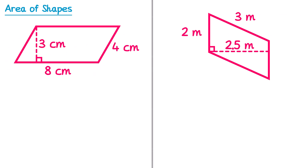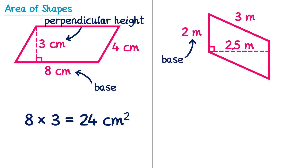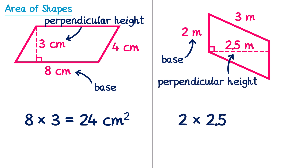Here are two more parallelograms for you to try. For the first, we multiply the base, which is 8, by the perpendicular height, which is 3. So 8 multiplied by 3 is 24cm squared. In the second question, the parallelogram has been turned on its side, so the base is 2 and the perpendicular height is 2.5. So we do 2 multiplied by 2.5, which is 5, and the units this time are meters squared because the lengths were in meters.